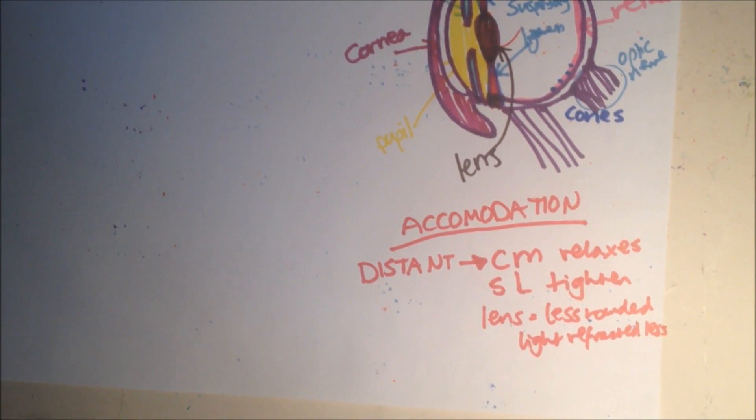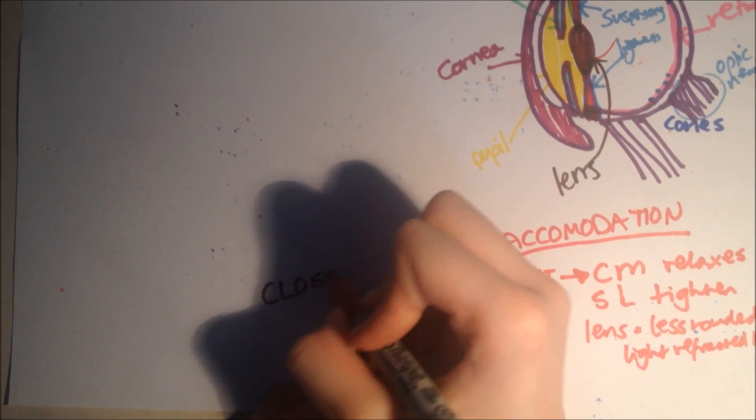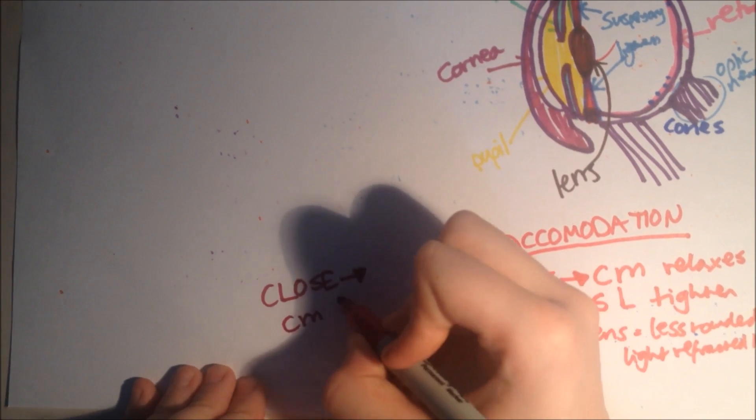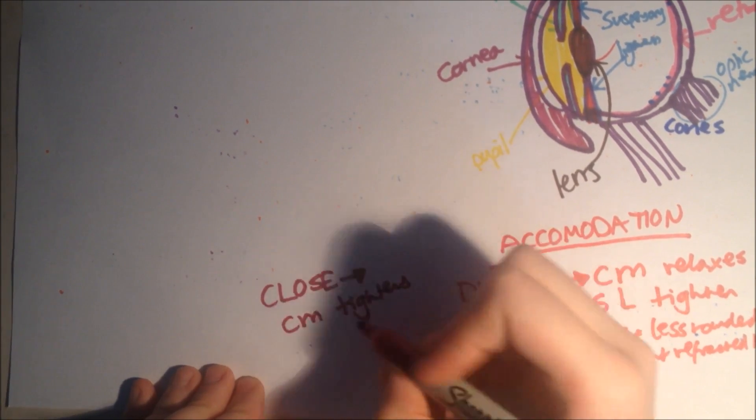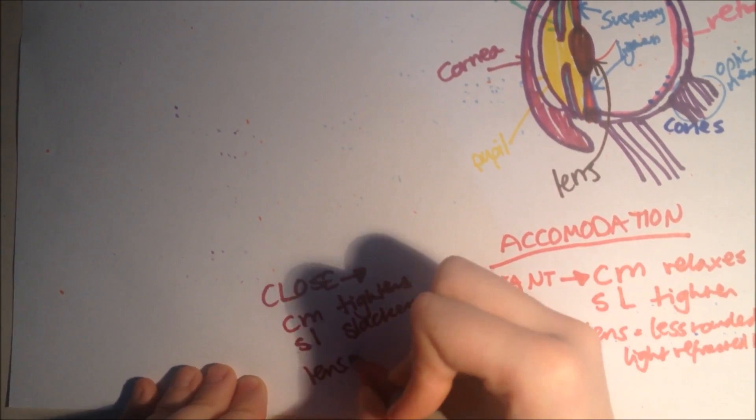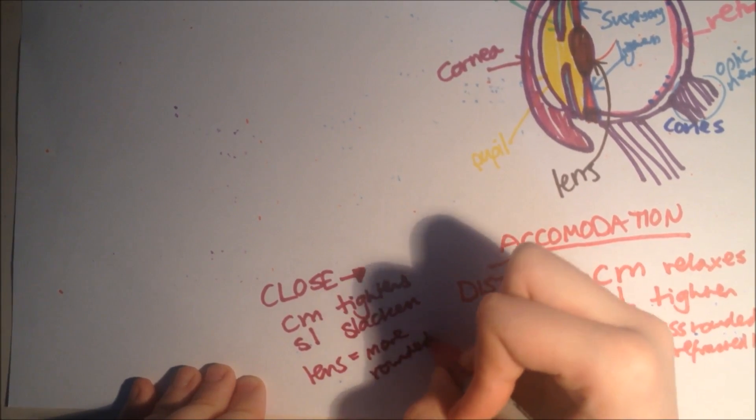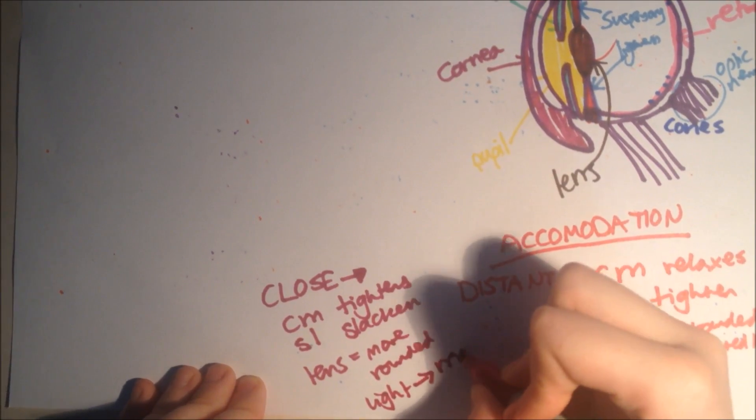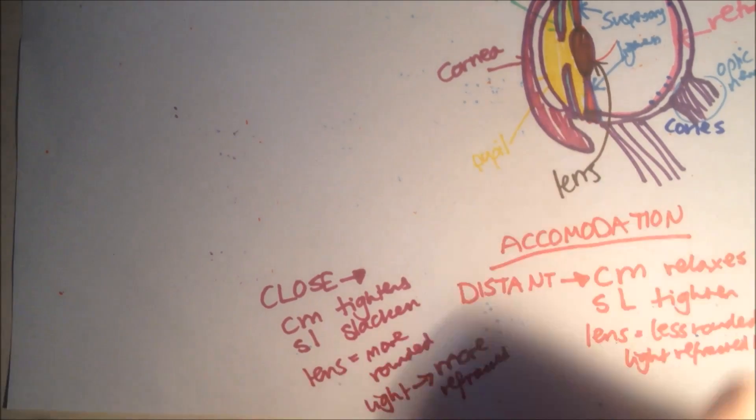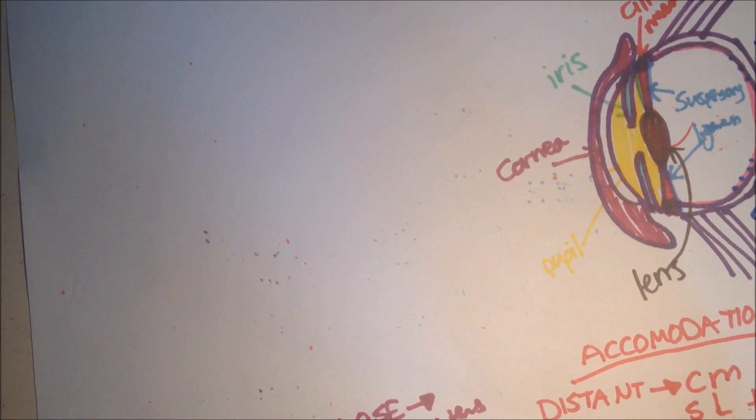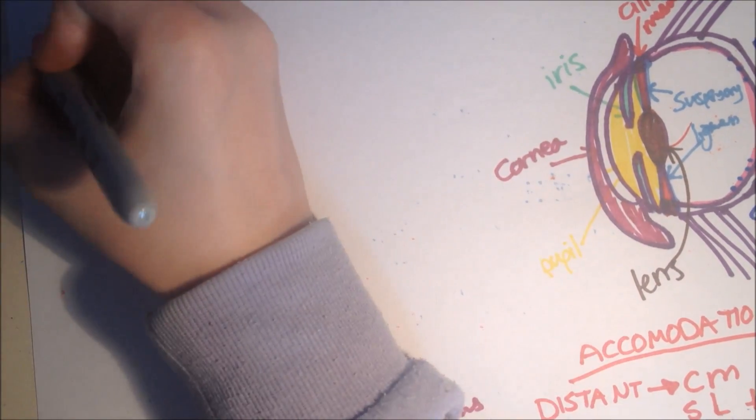So that's looking at distant objects, ciliary muscle relaxes, suspensory ligament tight, and now onto this one, closed objects, where the ciliary muscle tightens, or contracts, which lets the suspensory ligament slacken. The lens is more rounded, so light is refracted even more. Okay, so which part are we on? Oh yes, we just did the near and distant objects. So now I'm going to talk about,